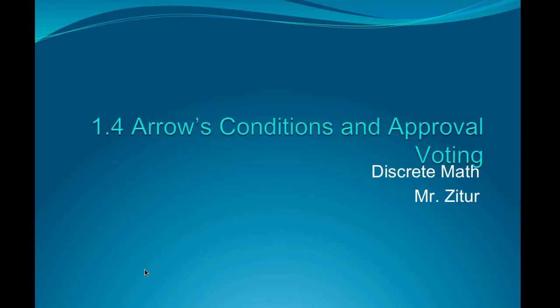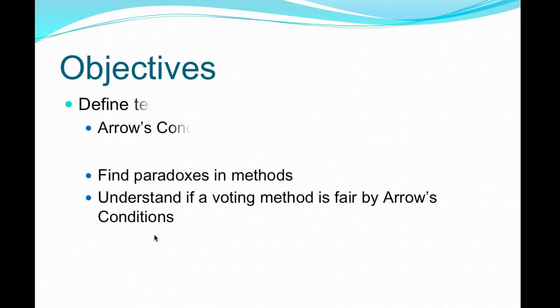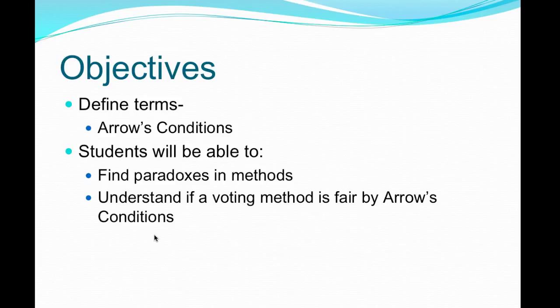In this section we're going to look at 1.4 Arrow's Conditions and Approval Voting. We're going to try to find paradoxes in methods and understand if a voting method is fair by Arrow's Conditions. We also want to define what Arrow's Conditions are.